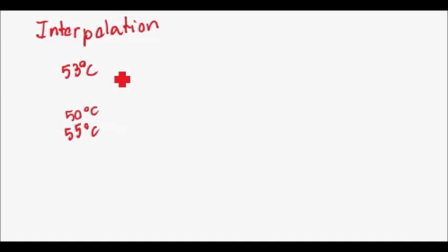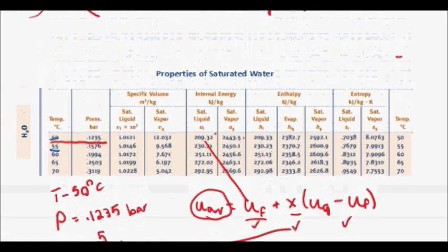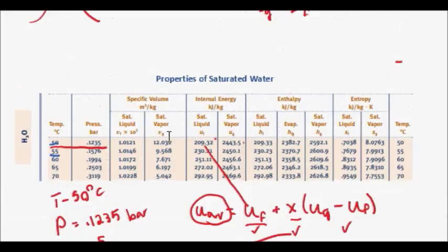Finally, what I wanted to discuss is interpolation. Interpolation is often used, let's say you have something that is at 53 degrees Celsius, but you only have values for 50 and 55 degrees Celsius. And you know the internal energies of those values or you know the enthalpies of those values.